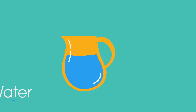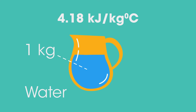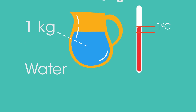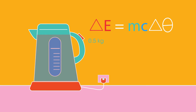Water has a specific heat capacity of 4.18 kilojoules per kilogram per degree Celsius, meaning it needs 4.18 kilojoules to heat one kilogram up by one degree Celsius. We can use the equation ΔE = mcΔθ to work out the energy needed to boil a kettle of water. If we take 0.5 kilograms of water, or half a litre, at 18 degrees Celsius and heat it to boiling...